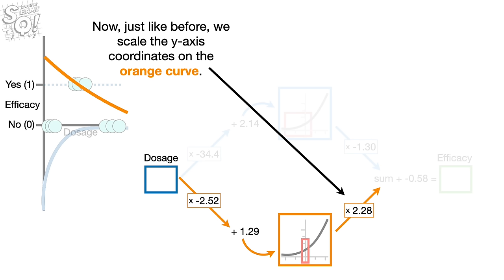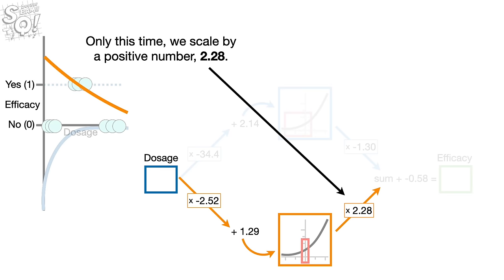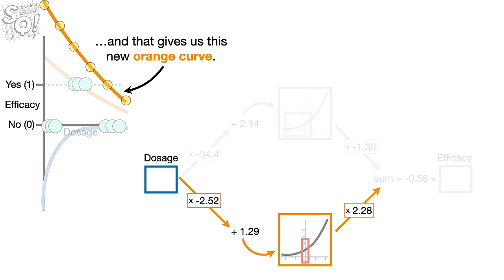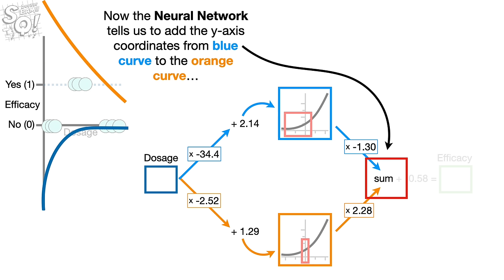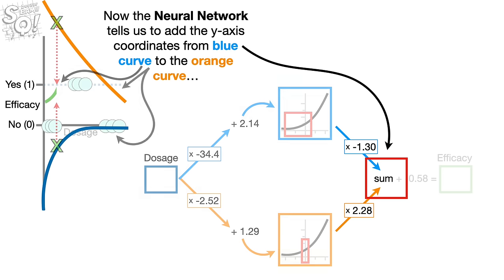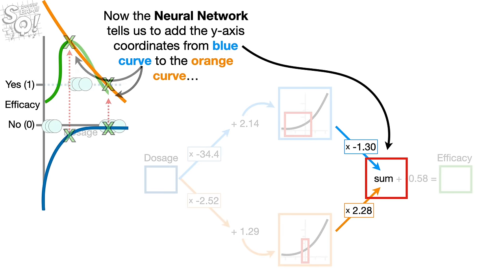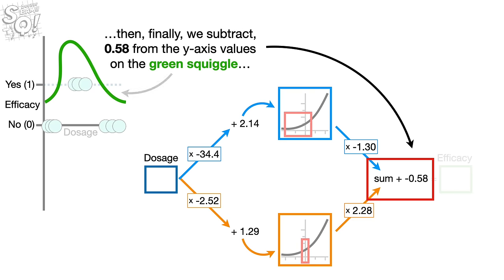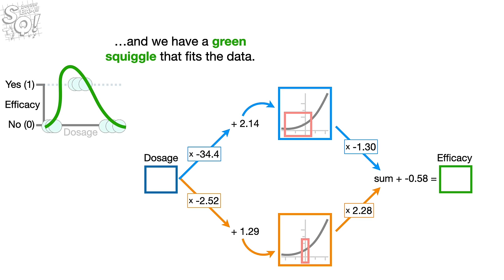Just like before, we scale the y-axis coordinates on the orange curve, but this time we scale by a positive number, 2.28, giving us this new orange curve. Now the neural network tells us to add the y-axis coordinates from the blue curve to the orange curve, and that gives us this green squiggle. Then, finally, we subtract 0.58 from the y-axis values on the green squiggle, and we have a green squiggle that fits the data.